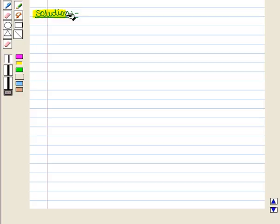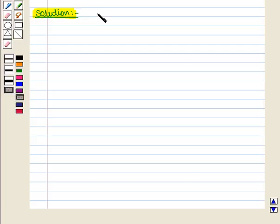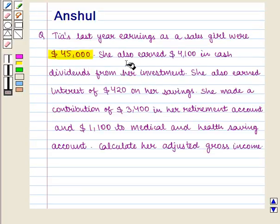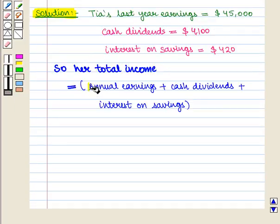Now let us start with the solution of the given question. We have to calculate Tia's adjusted gross income. For this, we will first calculate her total income. Tia's last year earnings are $45,000. In addition, she earned cash dividends of $4,100 from her investment and interest of $420 on her savings. So her total income is given by annual earnings plus cash dividends plus interest on savings.